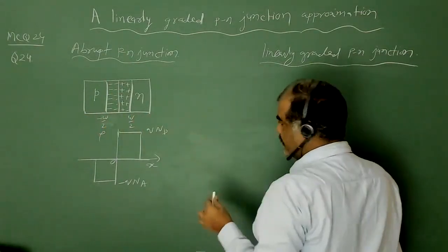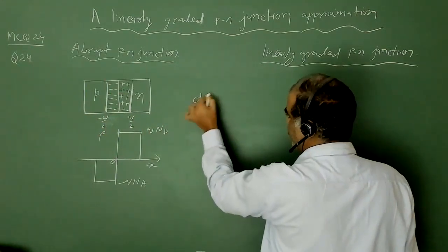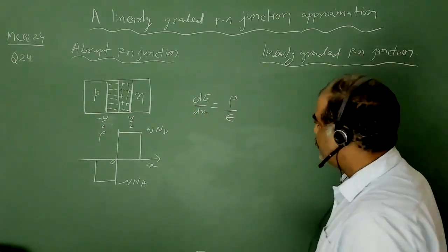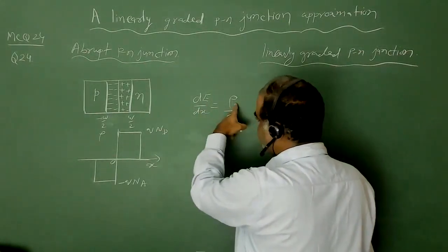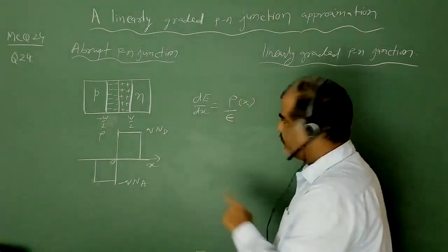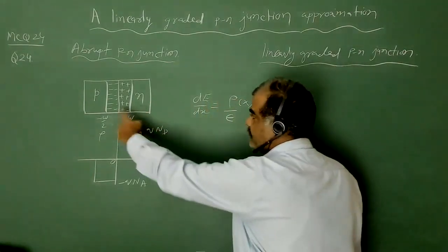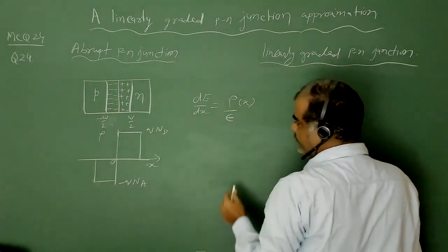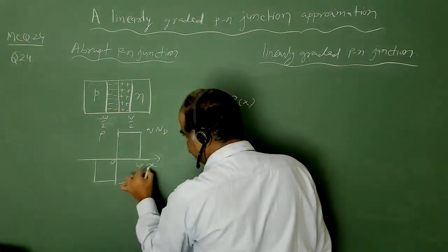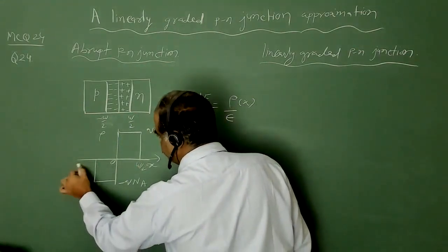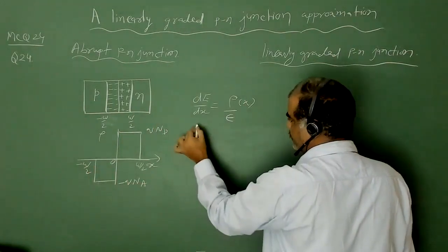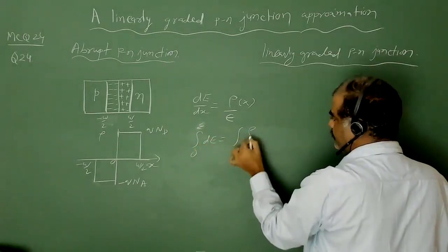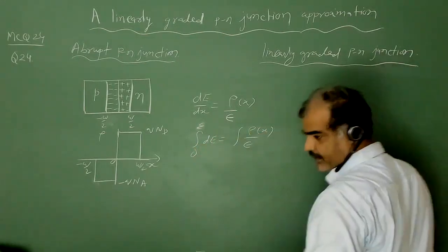Now if we want to calculate the variation of electric field along the depletion region, we know the Poisson equation. The Poisson equation is given by dE/dx = ρ/ε. In a medium we can solve this Poisson equation, and if ρ is known then we can find E. So now we know ρ is constant and given, so I can integrate this equation.